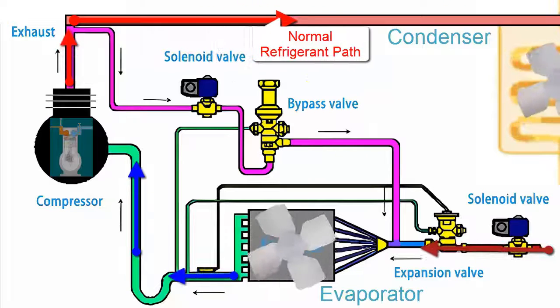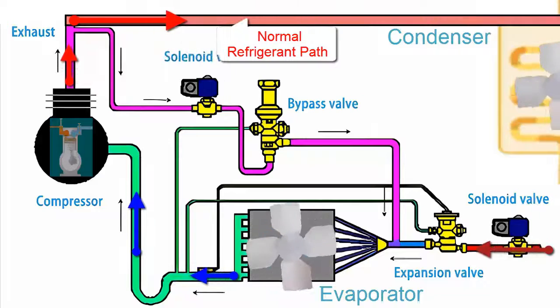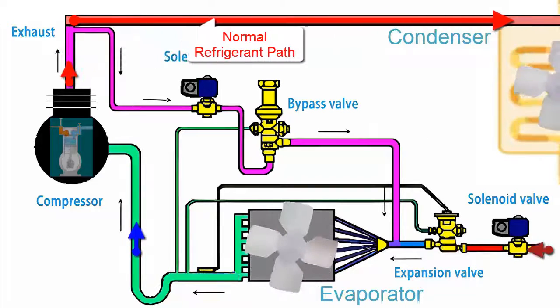The hot gas bypass system involves diverting the discharge gas from the compressor, which is at high temperature and pressure, directly to the evaporator, bypassing the other components of the basic system.